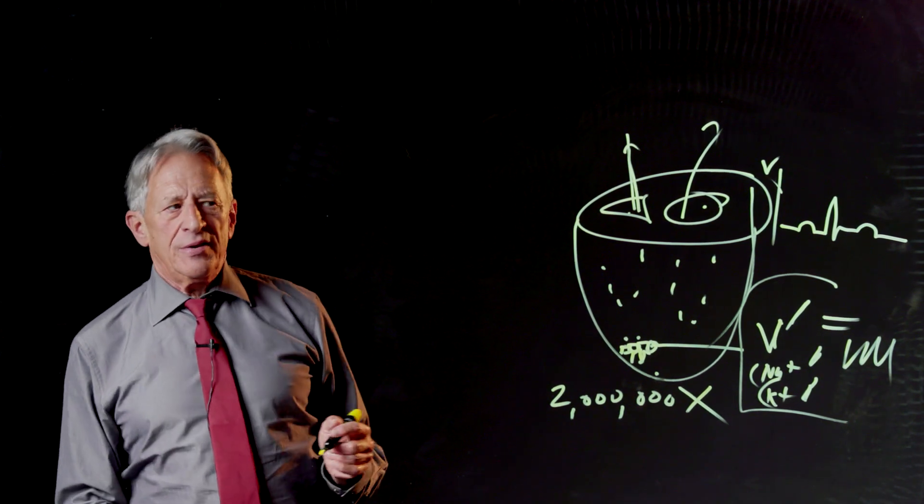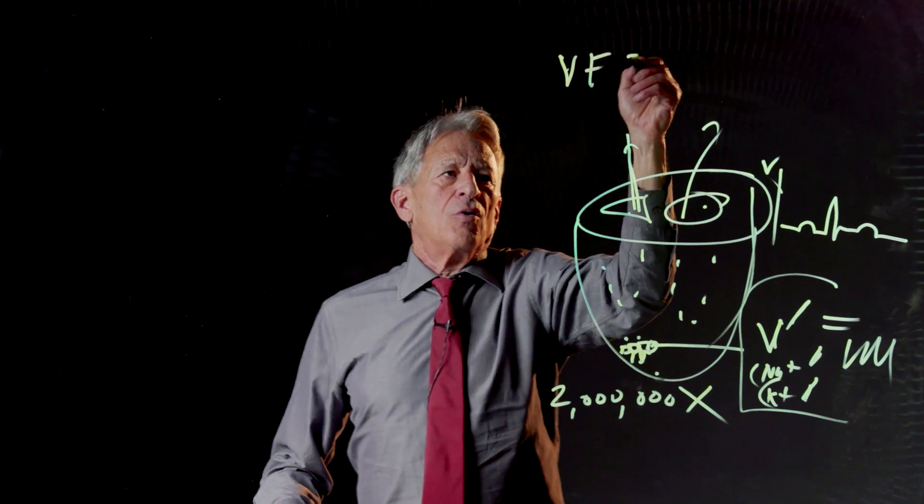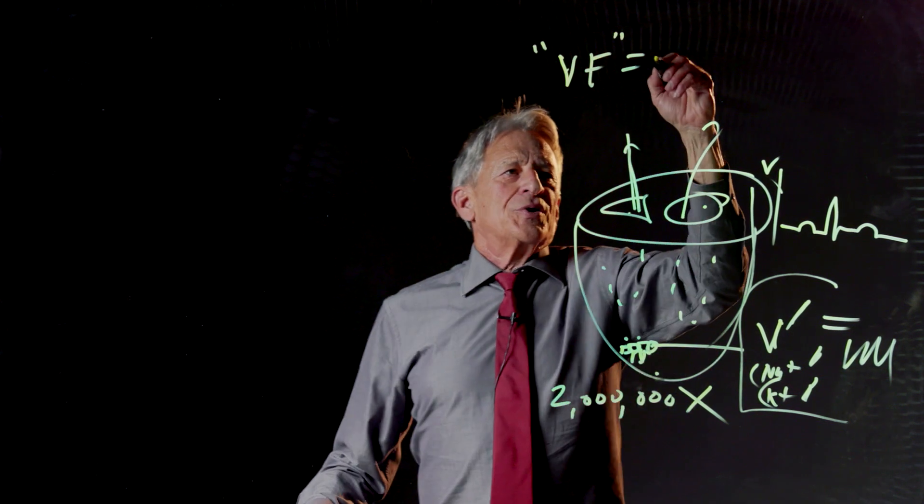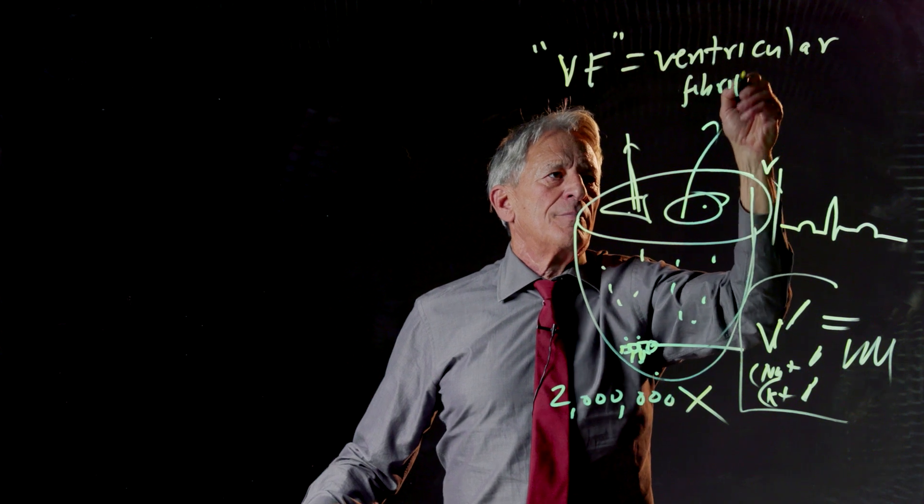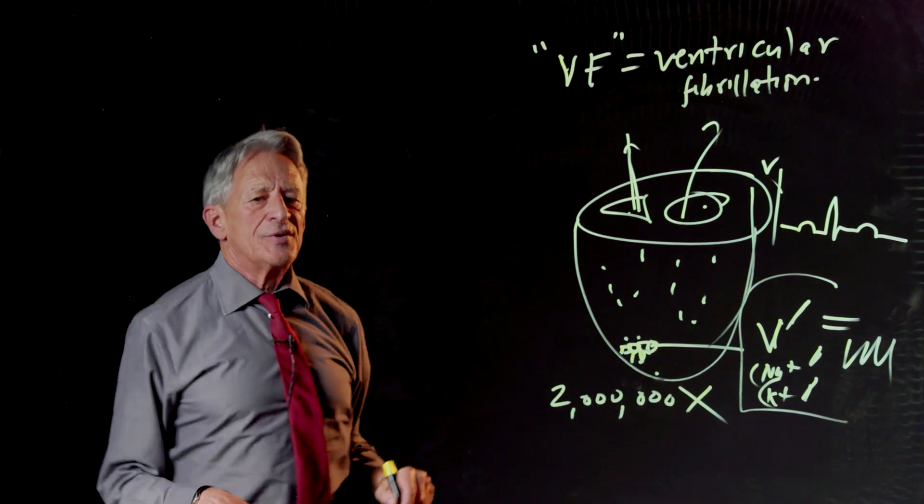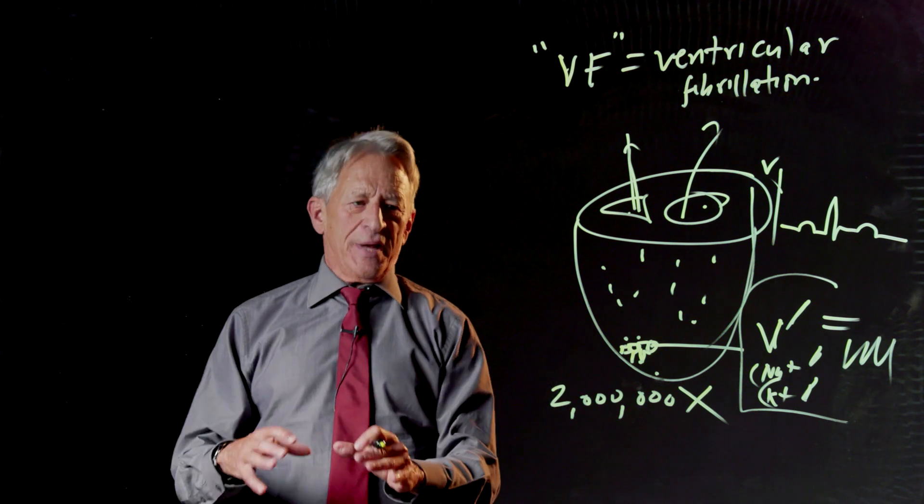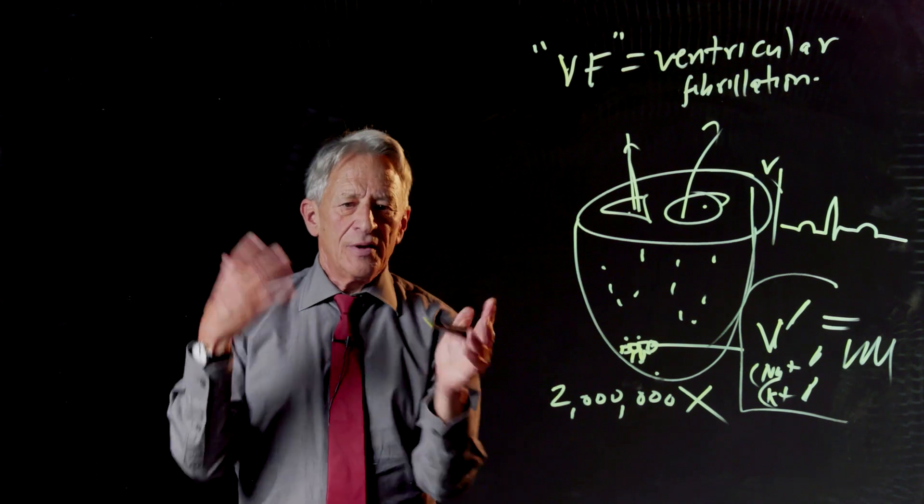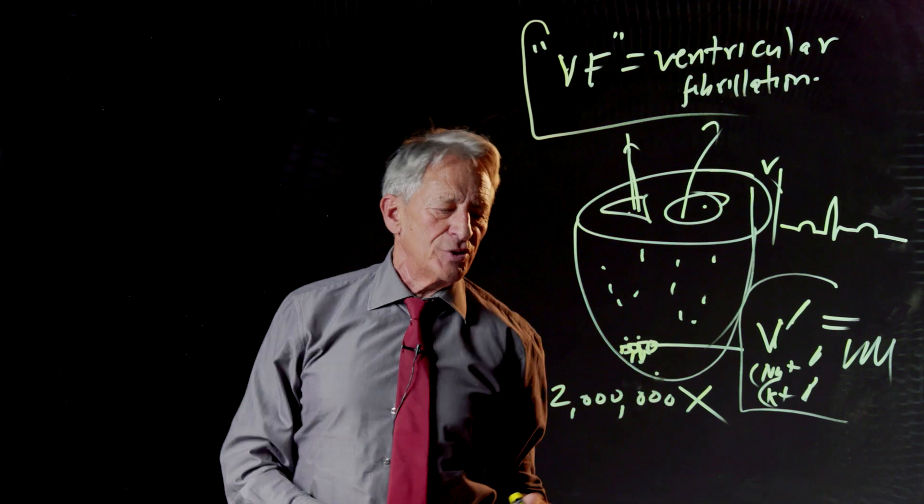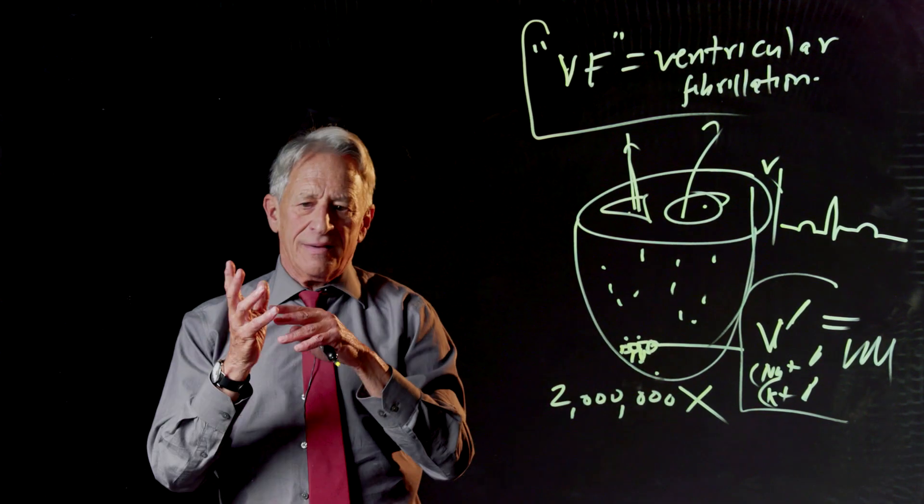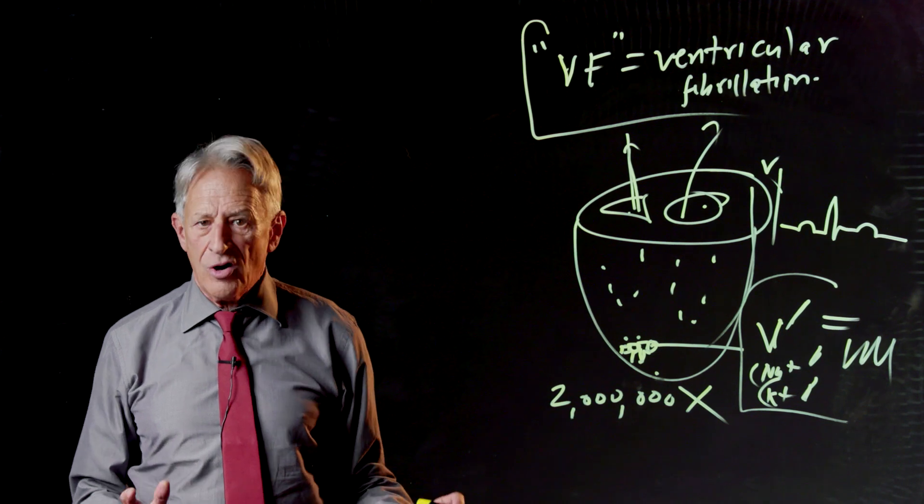But what we're interested in is understanding the circumstances that lead to the condition called VF, which stands for ventricular fibrillation. And this is sudden cardiac death. This is the scene in ER when they yell clear and they shock the patient with the paddles. This frenzied and irregular contraction is what happens in ventricular fibrillation. And the nice uniform wave gives way to a completely disordered contraction. And that's what we want to understand the causes of.